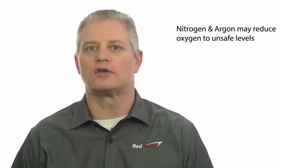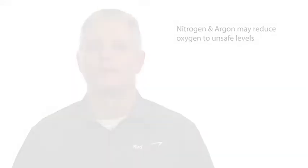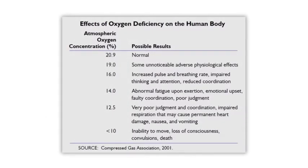Normal oxygen is 20.8 or 20.9 percent. At 19% oxygen we're going to have some unnoticeable adverse physiological effects — we're not getting enough oxygen to the cells. At 16% oxygen we're going to see an increased pulse and breathing rate, impaired thinking and attention, and reduced coordination. At 14% we see abnormal fatigue upon exertion, emotional upset, faulty coordination, and poor judgment.